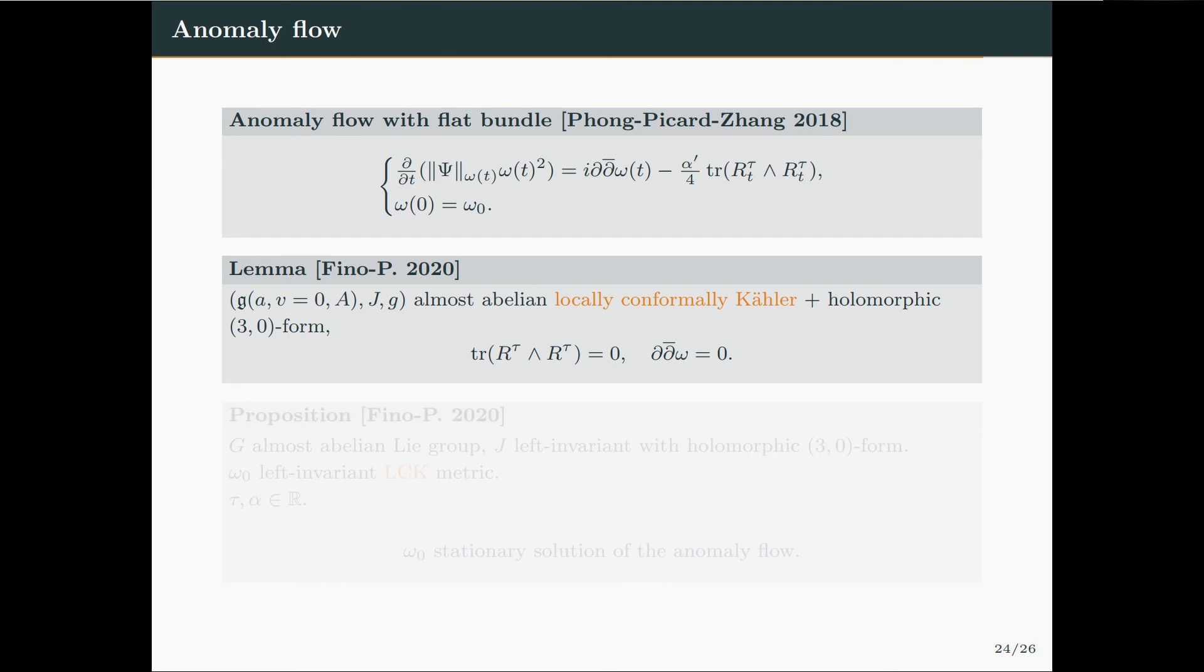So originally, the anomaly flow makes sense in a balanced setting, but one is free to try and study it for other types of Hermitian metrics as well. Now, what we proved is the following. If we have an almost abelian algebra with a Hermitian structure which is locally conformally Kahler and admits a holomorphic 3-0 form, then the two terms appearing on the right-hand side of the anomaly flow vanish.